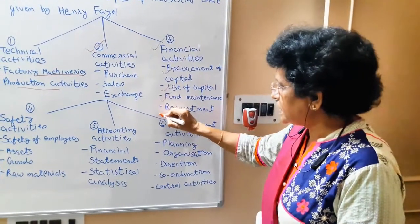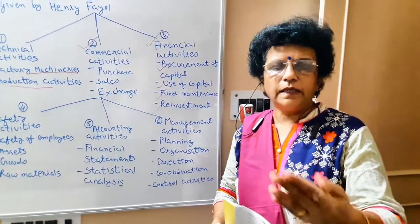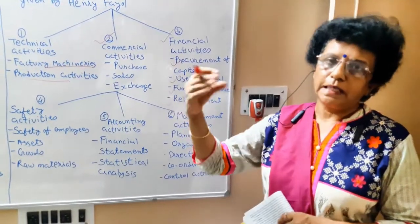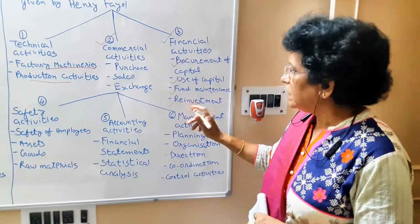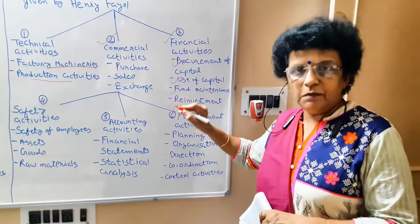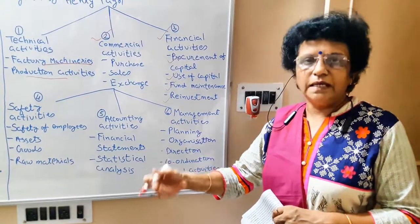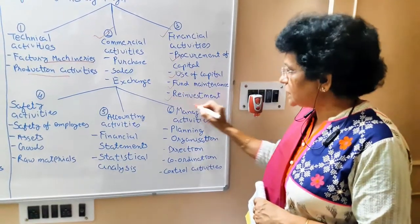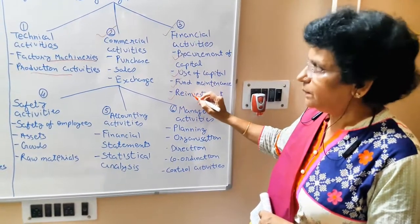Fourth under financial activity is reinvestment. Whatever profit the company earns, part of it is kept as ploughing back of profit. Reinvestment is required for maximization of wealth. It helps the company at times of crisis — for example, during a lockdown of 3 months, the company has to survive, pay salaries, maintain plant and machinery, and remain active. Such reinvestment funds kept aside can help the company survive.